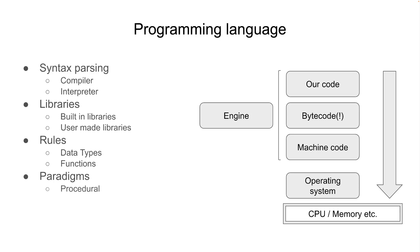Last but not least is the paradigm — how we write our code, what style we follow. We can write code in multiple ways, but broadly there are three: procedural, object-oriented, and functional. Procedural is the most primitive level language style. In the early days of programming, there would be one or multiple functions, some variables, and some struct or primitive data types — that's how a procedural language is formed.